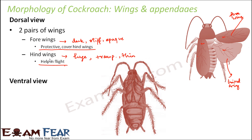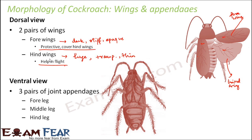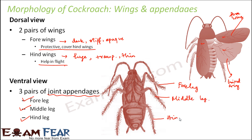From the ventral view we can more clearly see the appendages, that is the legs. Cockroaches have three pairs of jointed appendages: the foreleg, the middle leg, and the hind leg. The foreleg and middle leg are somewhat similar, however the hind leg is modified for jumping and hopping purposes. The hind legs are quite larger compared to the foreleg and middle leg.